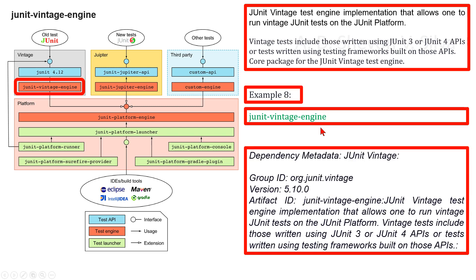Now we are considering JUnit Vintage in dependency metadata. The artifact ID is JUnit Vintage engine, for example in version 5.10.0, with group ID org.junit.vintage. The JUnit Vintage test engine implementation allows one to run vintage JUnit tests on the JUnit platform. Vintage tests include those written using JUnit 3 or JUnit 4 APIs, or tests written using testing frameworks built on those APIs.